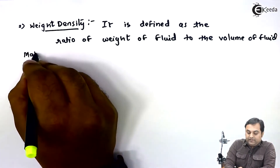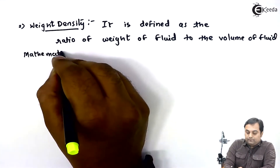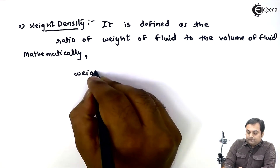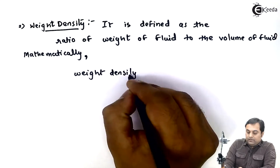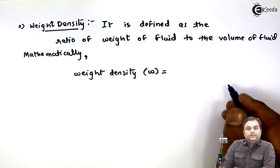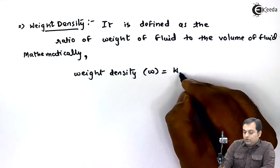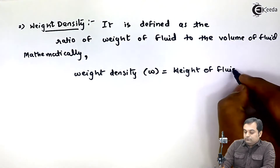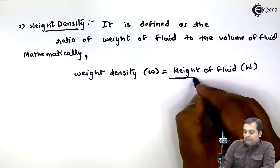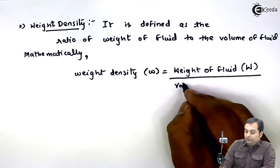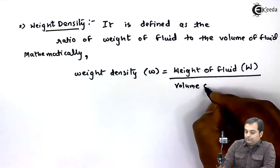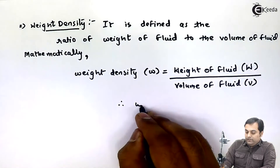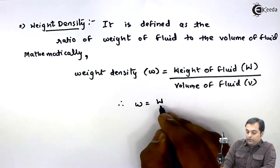Mathematically, weight density is denoted by small w, and it is equal to weight of fluid (capital W) divided by the volume of fluid (V). So weight density equals weight upon volume. The unit is Newton per meter cube, or kilonewton per meter cube if weight is in kilonewtons.